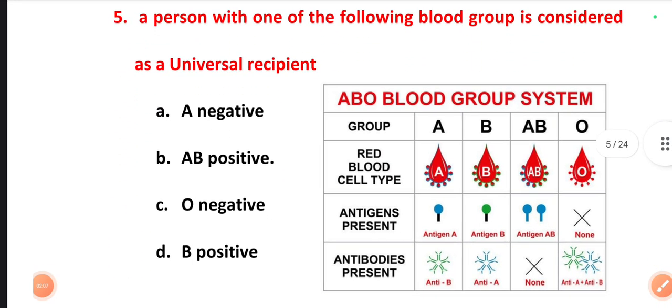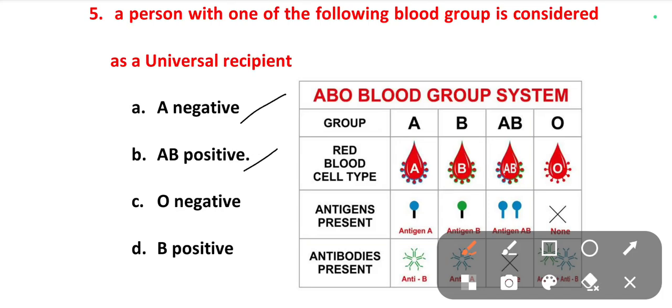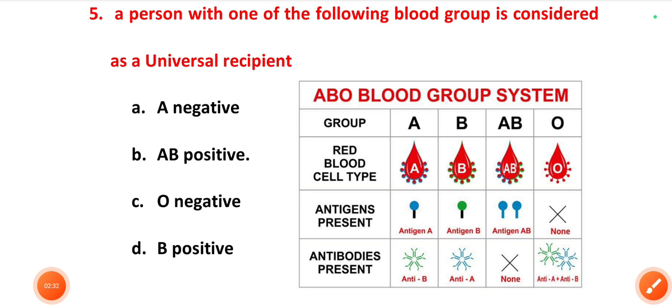The next one is: a person with one of the following blood groups is considered as universal recipient. Among the four blood groups, which one is called universal recipient? Options are A negative, AB positive, O negative, B positive. The right one is AB positive — because the AB blood group consists of no antibodies.